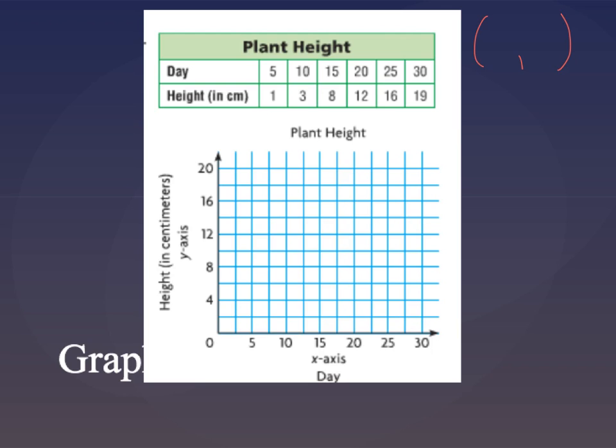So for example an ordered pair could be 1, 2. Alright, so when we put all this information from the table into ordered pairs we are then going to graph it on our coordinate plane.